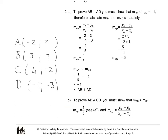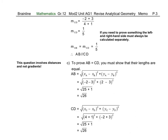For question 2B, to prove parallel lines, we must show that the two gradients are equal. We already have the gradient of AB, which is 1 over 5. Working out the gradient of CD: we take the difference in y-values, minus 2 minus minus 3, which becomes plus 3, over the difference in x-values, 4 minus minus 1, which becomes plus 1. If we simplify, the gradient of CD is indeed also 1 over 5, and therefore we can conclude that line AB is parallel to CD, since the two gradients are exactly the same.